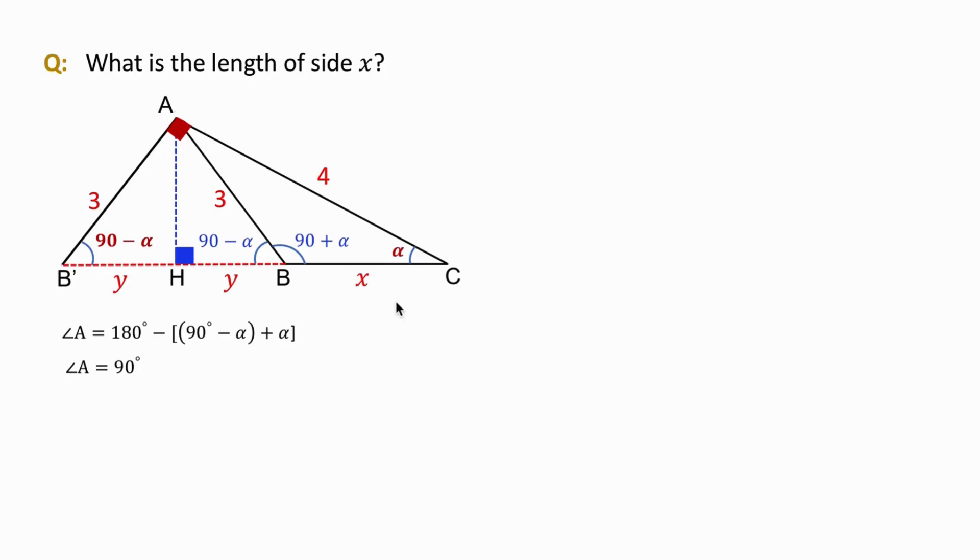So, if this angle is 90 degrees, we can find the length of B'C, which is 2y plus x using Pythagorean theorem. So, B'C or hypotenuse in this triangle, AB'C is the square root of the two sides squared and added together. We get B'C equals 5.